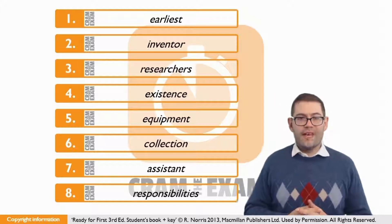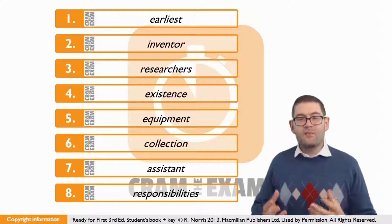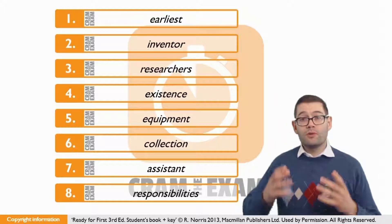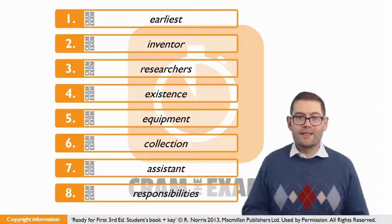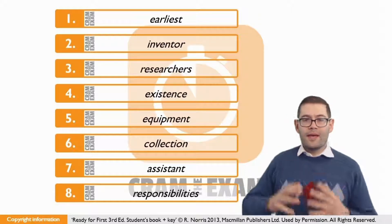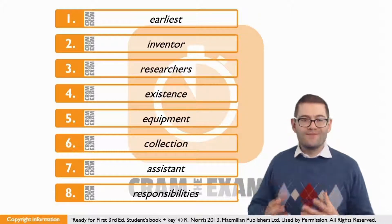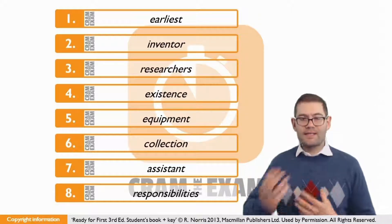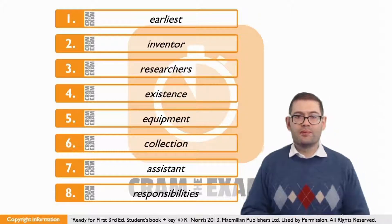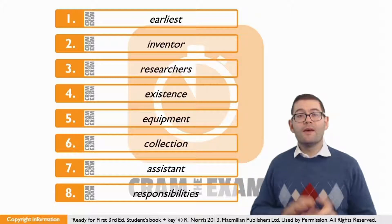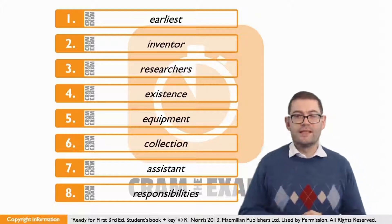The answer for question seven is 'assistant' — he employed an assistant. For question number eight, we've got two adjectives before the gap — 'typing' and 'proofreading' — which lead us to believe we're going to need a plural noun. Naturally it lends itself to a plural noun, and of course the answer is going to be 'responsibilities.'